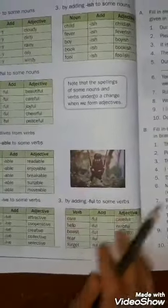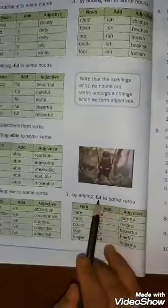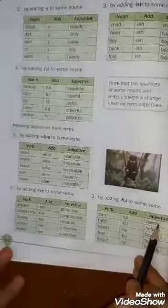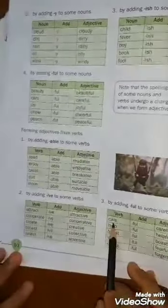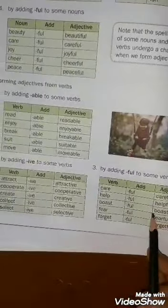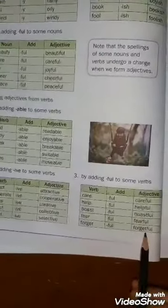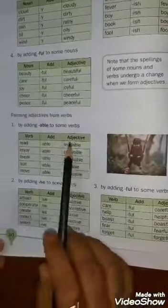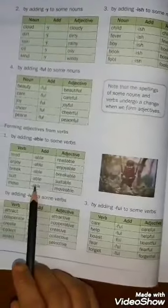Third method from verbs: by adding -FUL. Examples: care + ful = careful; help + ful = helpful; boast + ful = boastful; fear + ful = fearful; forget + ful = forgetful. So, I have taught you about nouns and verbs — what we add and how we add to form adjectives. Please read this table nicely and learn it very well.